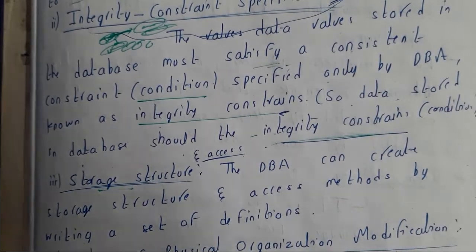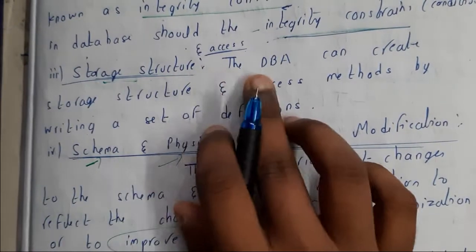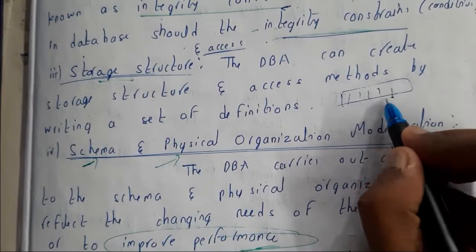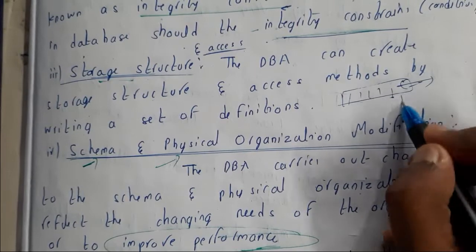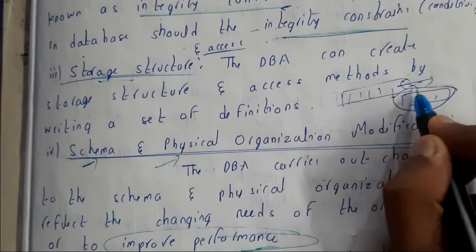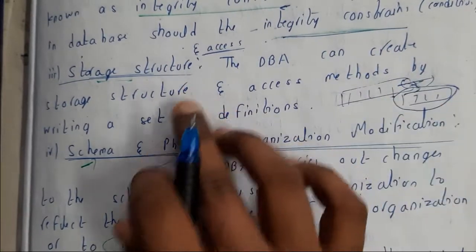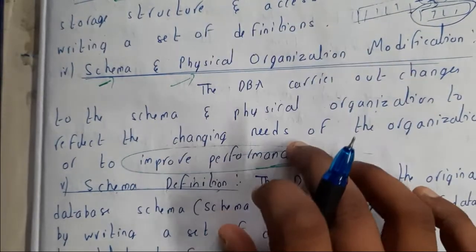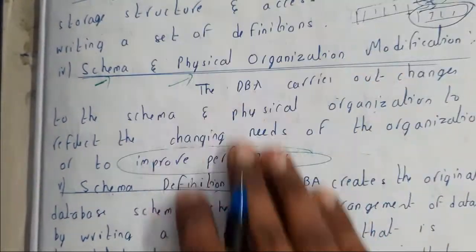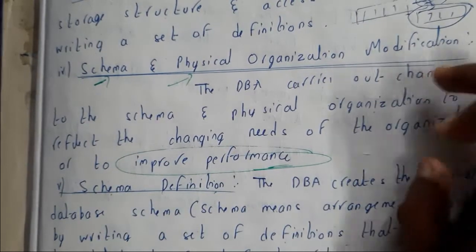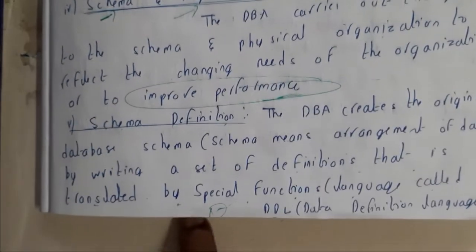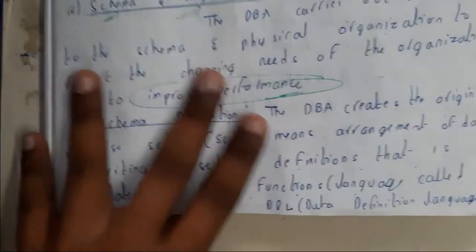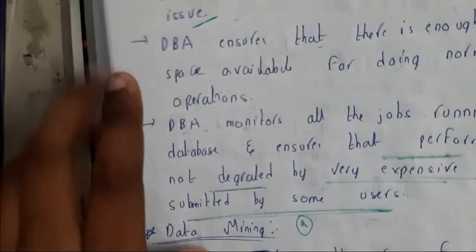Similarly, the DBA can create and manage storage structures. For example, initially if you are using a stack for your storage structure, and after some updates a queue is introduced, the database administrator can completely change it to a queue. The DBA can also handle physical organization changes — for example, if one hard disk has a storage issue, he can move the whole database to a new hard disk. Even schematic and semantic changes can be done by the database administrator.